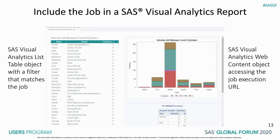You can also use the execution URL to include your program results in SAS Visual Analytics reports. Here we're looking at a SAS Visual Analytics report that contains a list table object on the left side sourced with filtered data from the SAS help.cars data set. On the right side is a SAS Visual Analytics web content object — we specified the job execution URL in the properties for this object so that the code was executed and the results displayed. These are just a few ways that you can use the job execution web application to web-enable your SAS code.